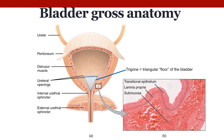At the bottom you see the internal urethral sphincter, which is under involuntary control, and then the external urethral sphincter, which is under voluntary control.